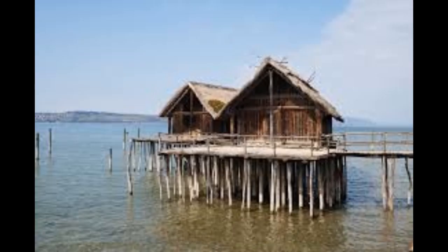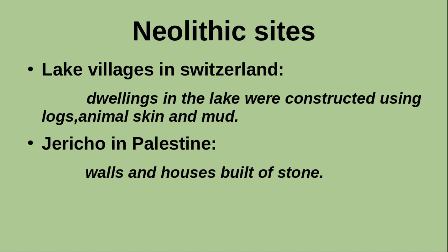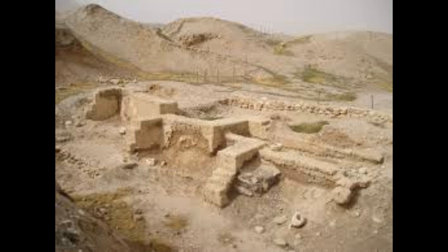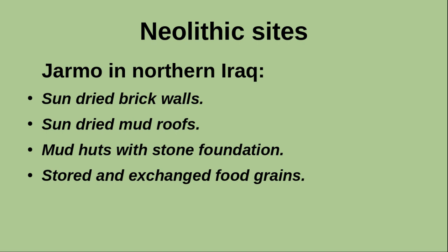There are a lot of Neolithic sites in different parts of the world. Lake villages in Switzerland is an example. The dwellings in the lake were constructed using logs, animal skin, and mud. Jericho in Palestine was another important Neolithic site, where we get evidences of walls and houses built of stone. Jermo in Northern Iraq is another important Neolithic site, with mud sheets with stone foundations, sun-dried brick walls, and sun-dried mud roofs. They stored and exchanged food grains.